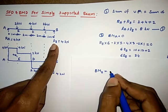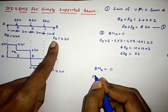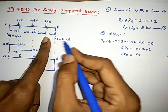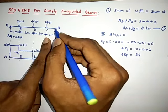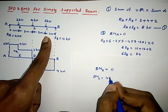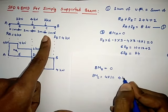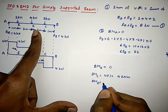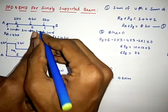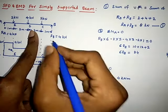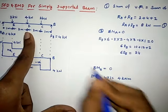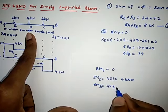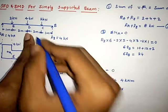Bending moment at C: the 4 kN reaction at B creates sagging (positive), so +4 × 1 = 4 kN·m. Bending moment at D: the 4 kN force at distance 3 m gives +4 × 3 = 12, and the 2 kN load at distance 2 m creates hogging (negative), giving −2 × 2 = −4. So BM at D = 12 − 4 = 8 kN·m.